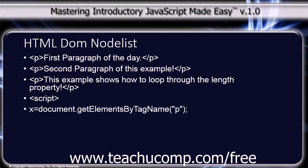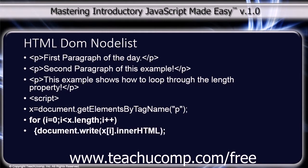The JavaScript code is: x = document.getElementsByTagName('p'); followed by a for loop: for (i = 0; i < x.length; i++) { document.write(x[i].innerHTML); document.write('<br>'); } and finally the closing curly bracket and closing script tag.